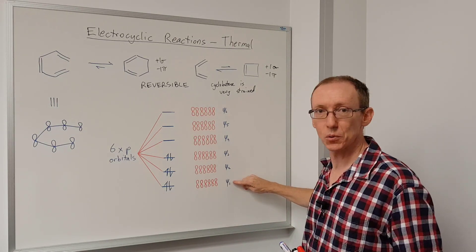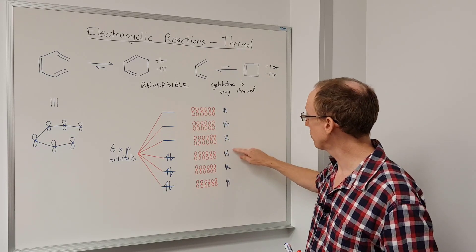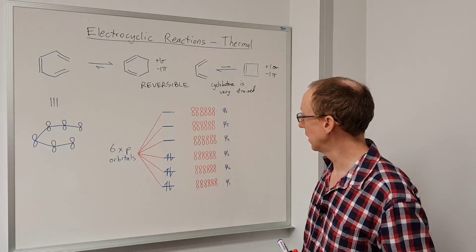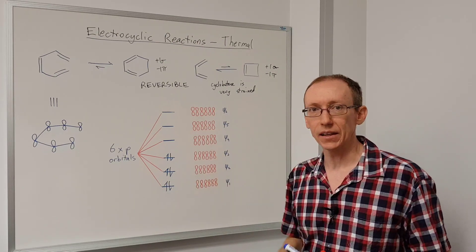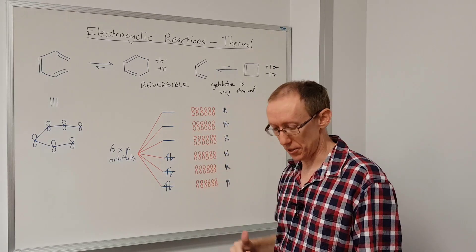Now with pi systems, we label these using the Greek letter psi. So psi one, two, three, four, five, six. And then we can look at the ways that they can overlap, and that determines which is the most energetically favorable.